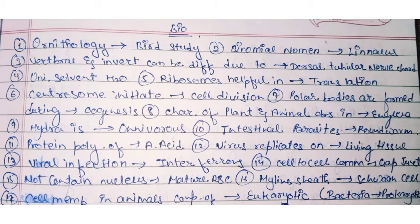Vertebrae and invertebrae can be differentiated due to the dorsal tubular nerve cord. The universal solvent is known as H2O, that is water. Ribosomes are helpful in translation. Centrosome initiates cell division — it helps to start the cell division.